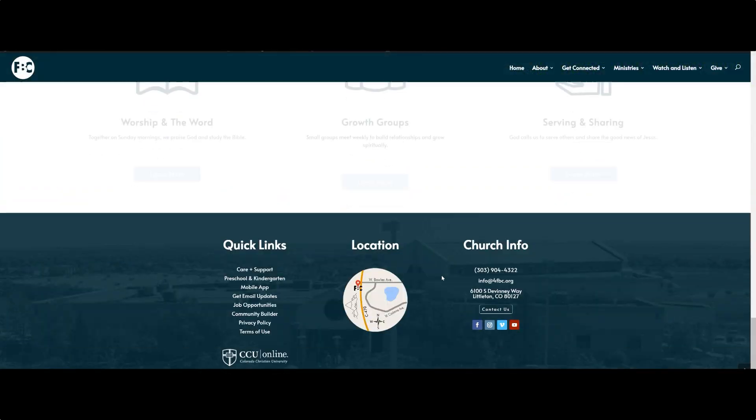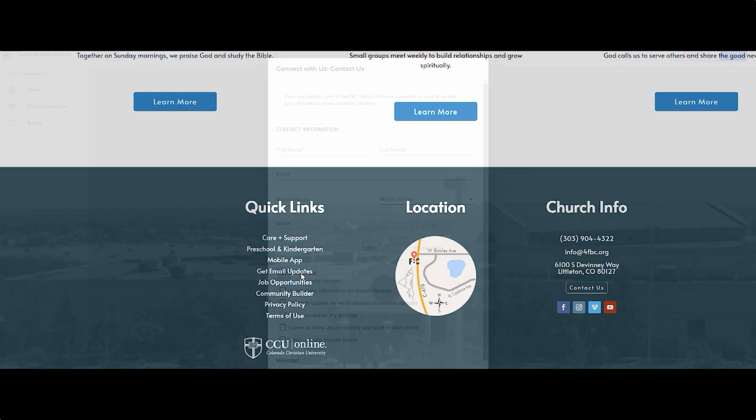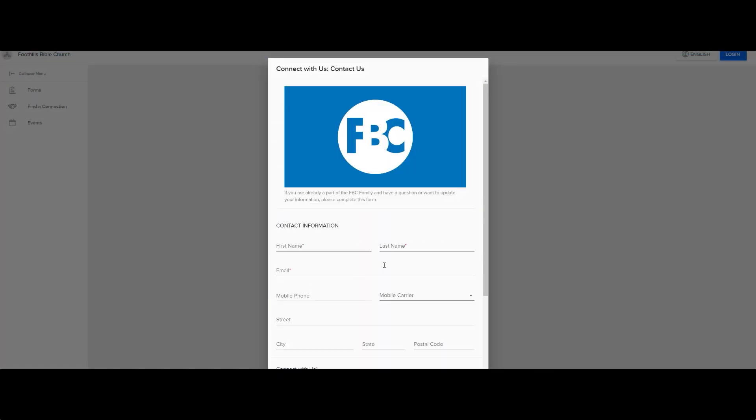To subscribe, you can fill out a Connect card with your info. Please write your email clearly, or you can visit our website and scroll down to the very bottom and hit Get Email Updates. Also, sometimes technology tries to outsmart us, so if you're not seeing them, be sure to check your junk folder.